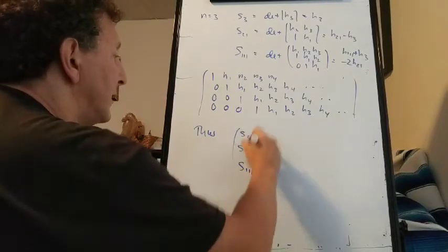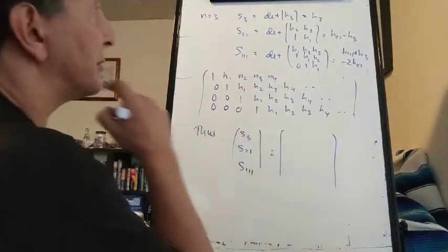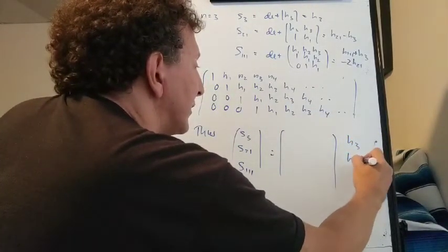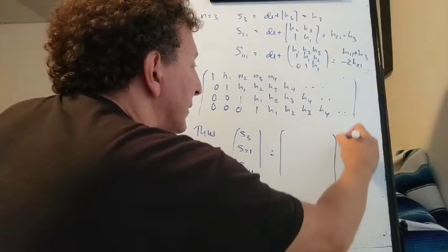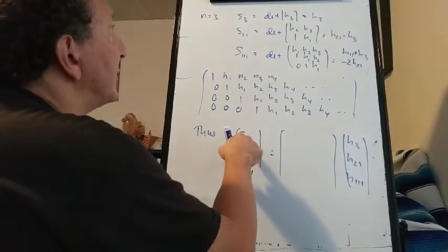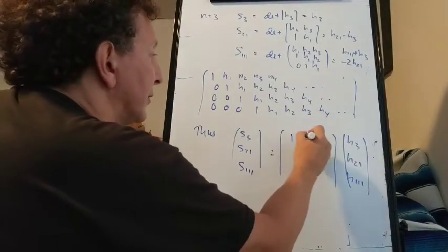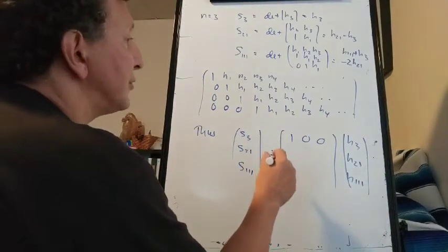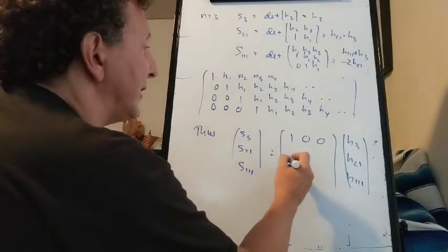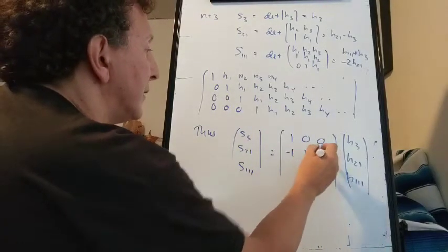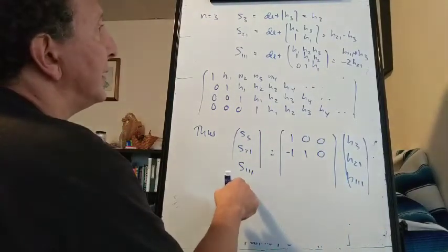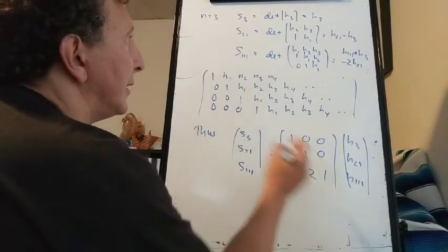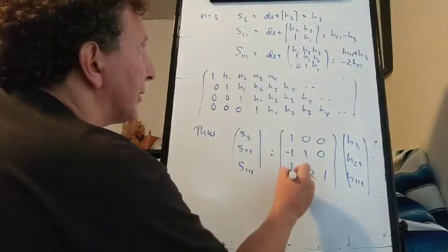And S_{1,1,1} is the determinant of the 3×3 matrix with H1s on the diagonal, giving H_{1,1,1} + 0 + H3 - 0 - H_{2,1} - H_{2,1} = H_{1,1,1} - 2H_{2,1} + H3. So S_3 = H3, S_{2,1} = H_{2,1} - H3, and S_{1,1,1} = H_{1,1,1} - 2H_{2,1} + H3.